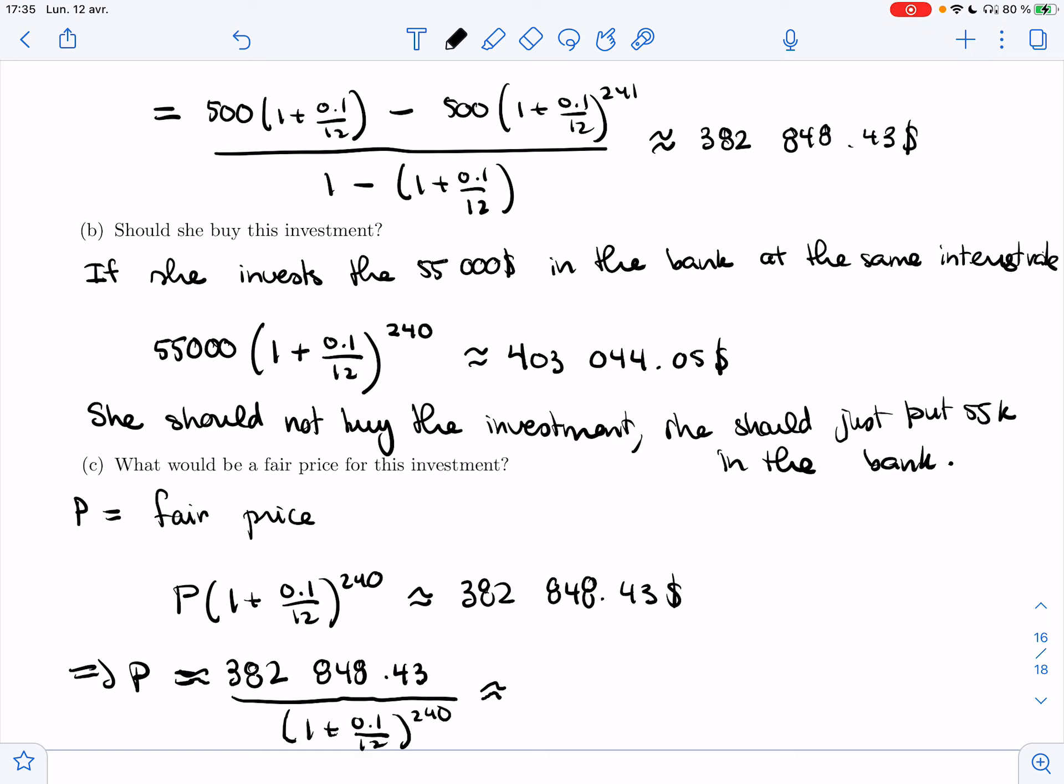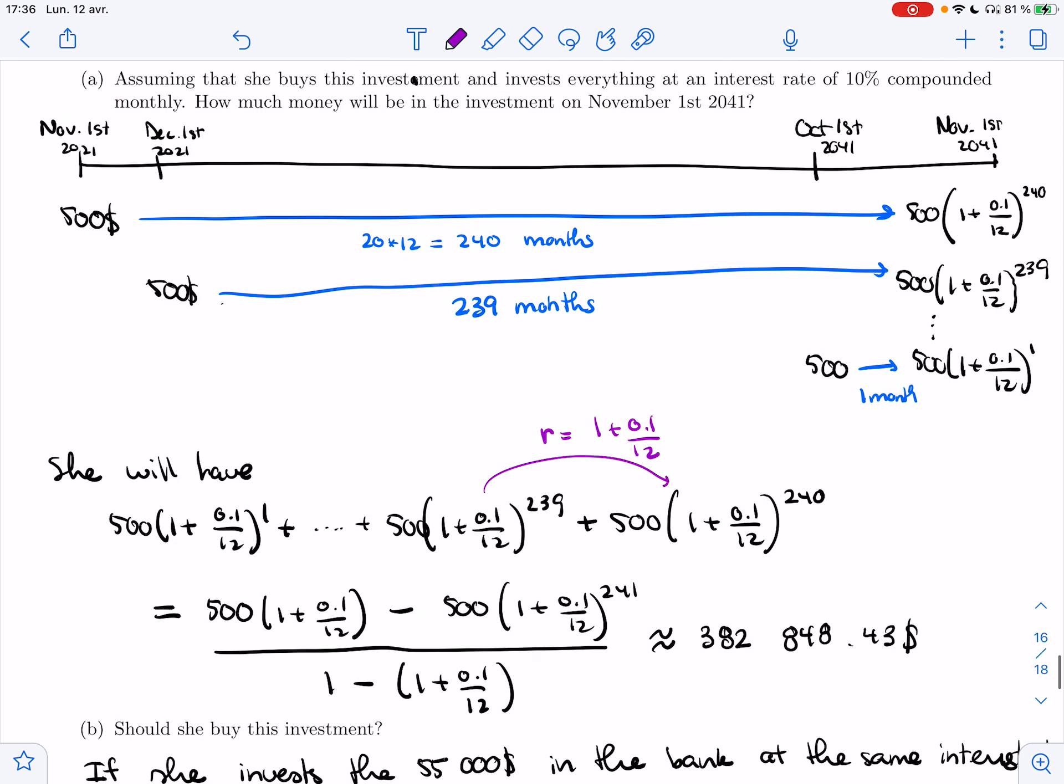And let's see what we get. So this amount that we already computed, I want to divide it by (1 + 0.1/12)^240. And so we get $52,244.08. This is the fair price.